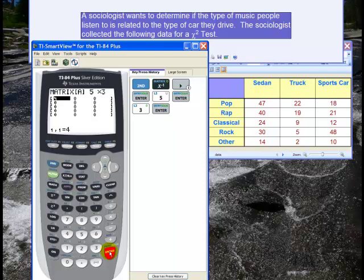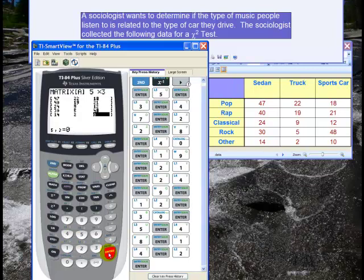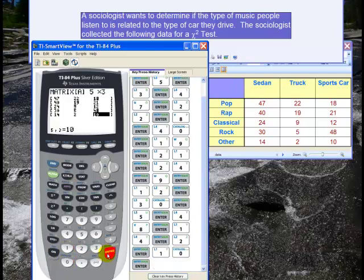And now I just type in all the numbers. So 47, enter, 22, enter. And then I type in all the rest of them. Okay, the last are two and ten. So ten and I hit enter.